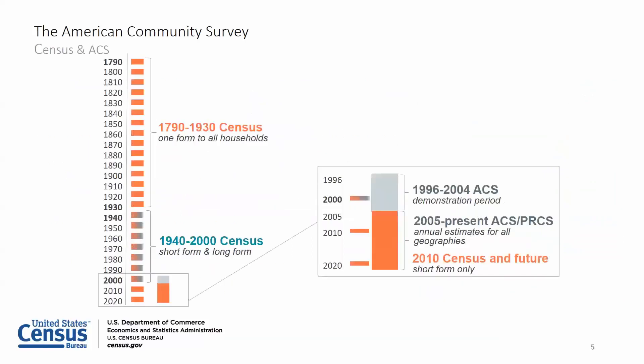In order to understand the ACS and why it exists, we need to discuss a bit of Census history. The first Census of the United States was conducted in 1790 and occurred every 10 years with one form used to collect data from all households until 1930. From 1940 to 2000, the Decennial Census contained a short form for all households and a long form used to collect data from a sample of households. The long form approach worked well initially, but the data became less and less current as the decade progressed after each Decennial Census.